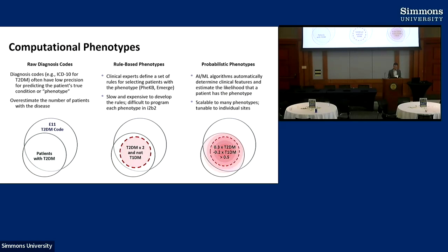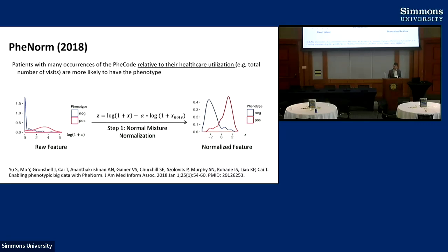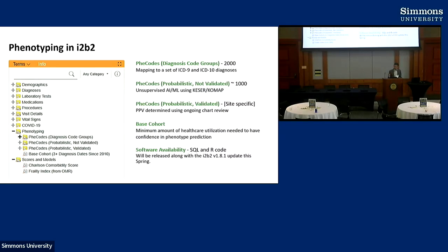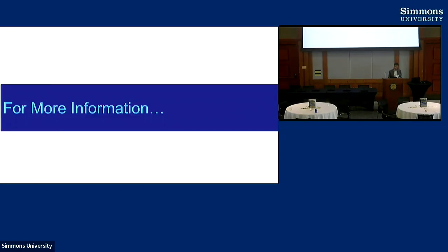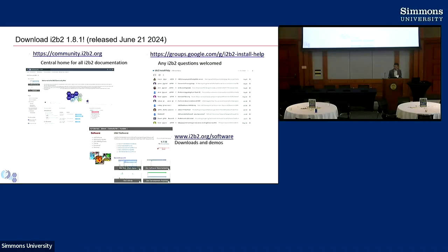This is the computational phenotyping portion — Griffin's slide, which he showed earlier. Diagnosis codes, for example, are not great at precision when selecting a cohort that actually has that diagnosis. Using rule-based phenotypes is one solution; a more scalable solution is probabilistic phenotypes such as PheNorm — an algorithm that Griffin talked about earlier, developed by Tianxi Cai and her team. These tools are being integrated into i2b2, and there are modifications to the ENACT ontology that allow you to choose patients with different phenotypes.